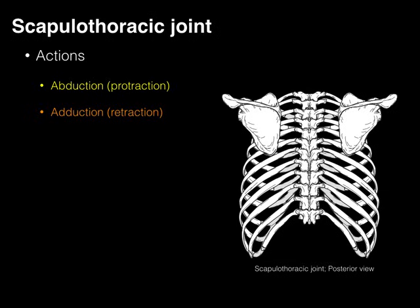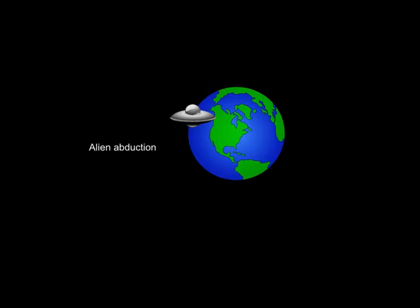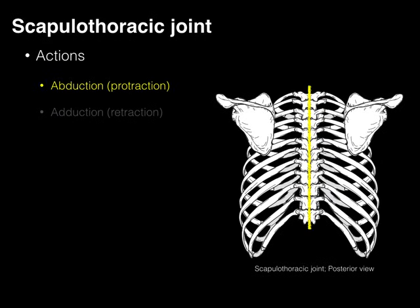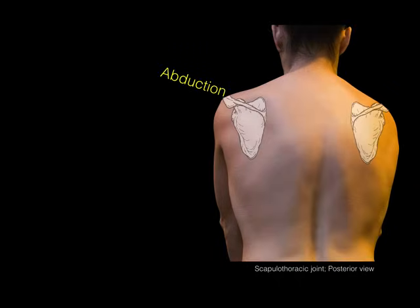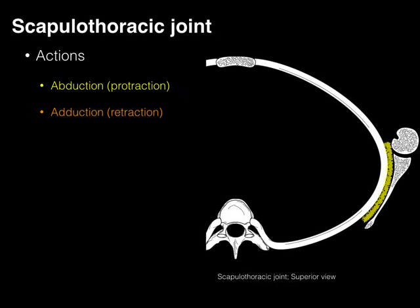Now let's look at abduction and adduction. Abduction means the scapula are moving away from the midline — think of it like the X-files: aliens abduct Mulder and take him away from the earth. Here we've got the abduction of the scapula; the yellow line marks the midline. Abduction is movement of the scapula away from the midline. Adduction — you add to, or move the scapula towards the midline. In surface anatomy: abduction, adduction of the scapulae.